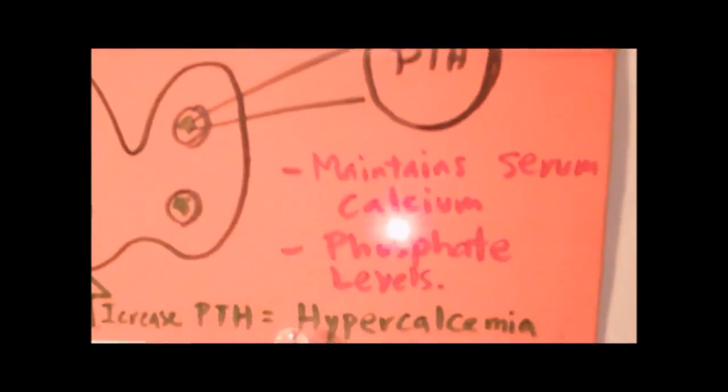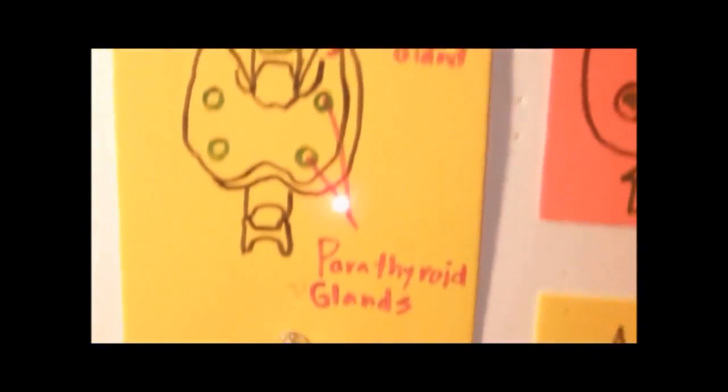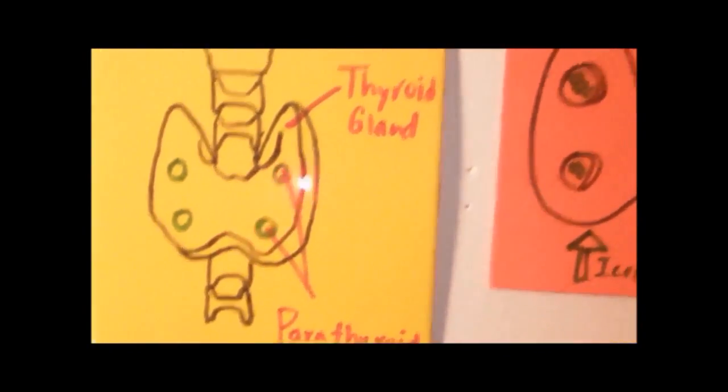Now when there's an excess of parathyroid hormone or PTH, it can lead to bone damage, it can lead to hypercalcemia, and eventually leads to kidney damage. So how does this happen?